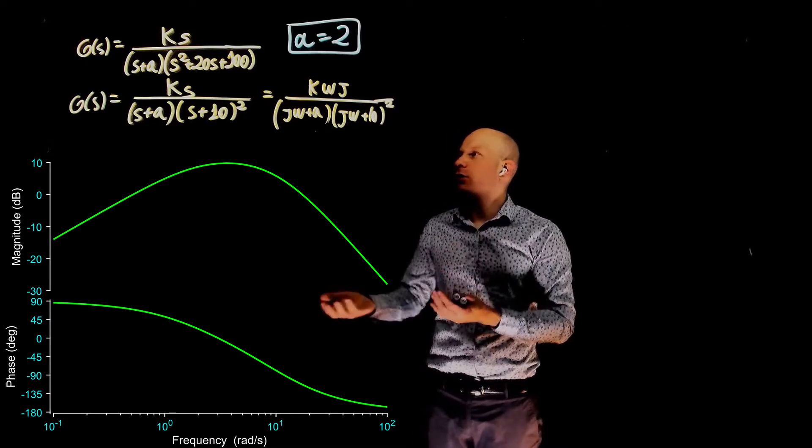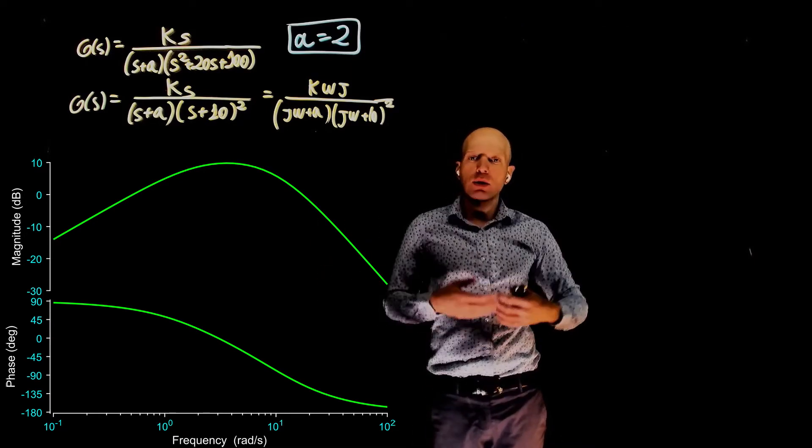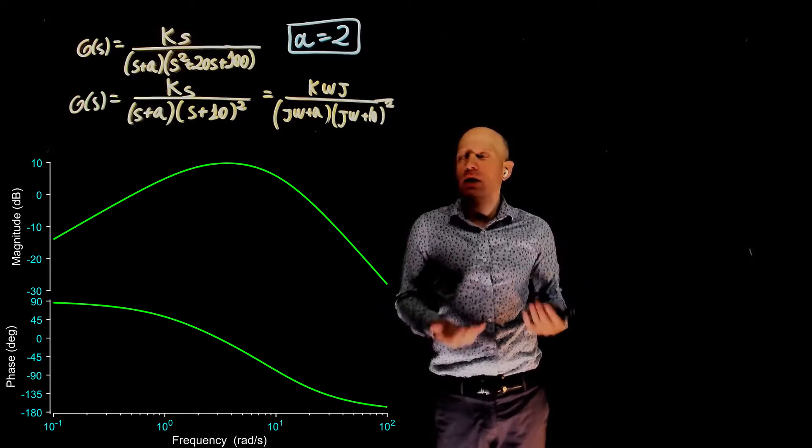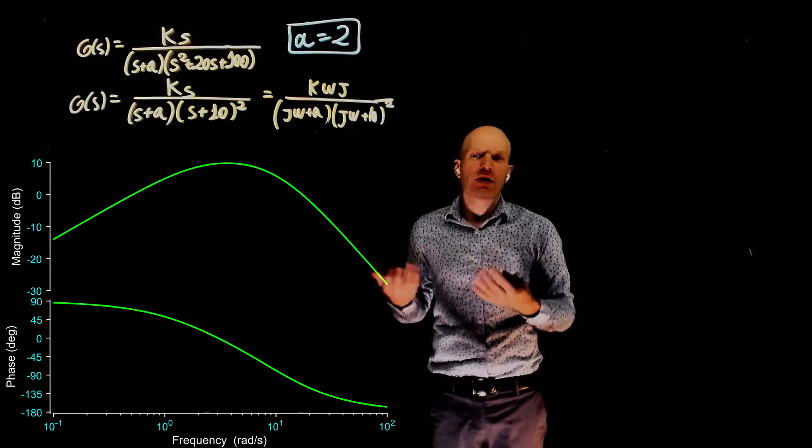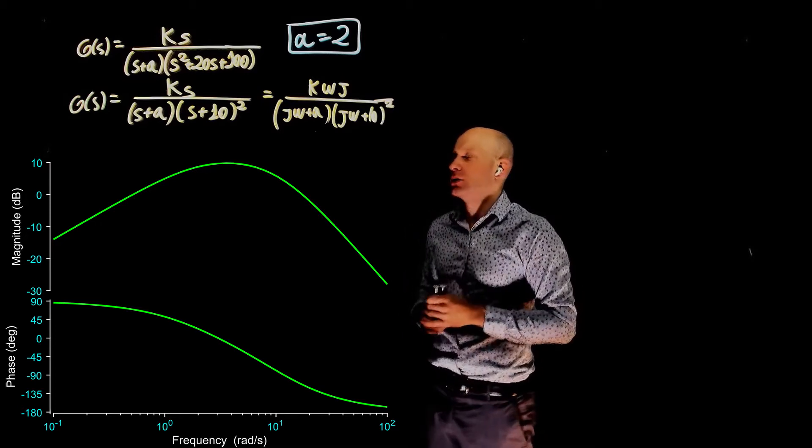Now that we have found parameter a, we can look for k. k can only be obtained if you look at the magnitude of the function, because k doesn't influence the phase. The phase of k is simply zero if k is a constant.